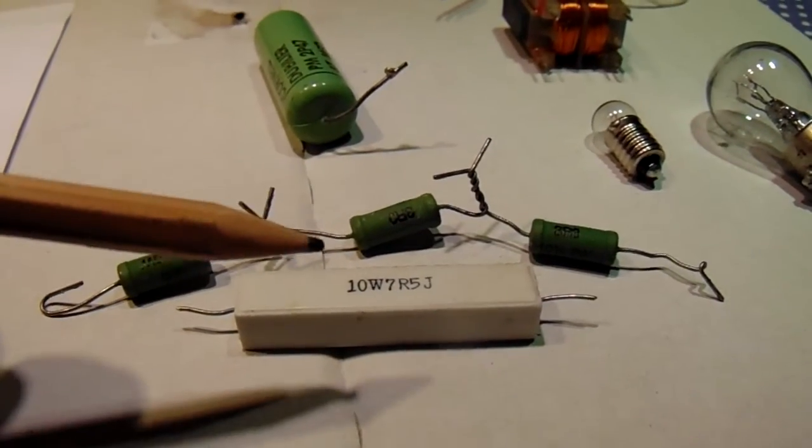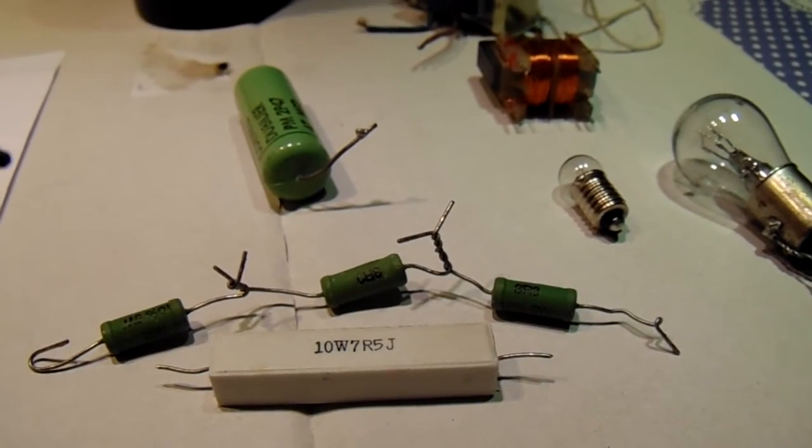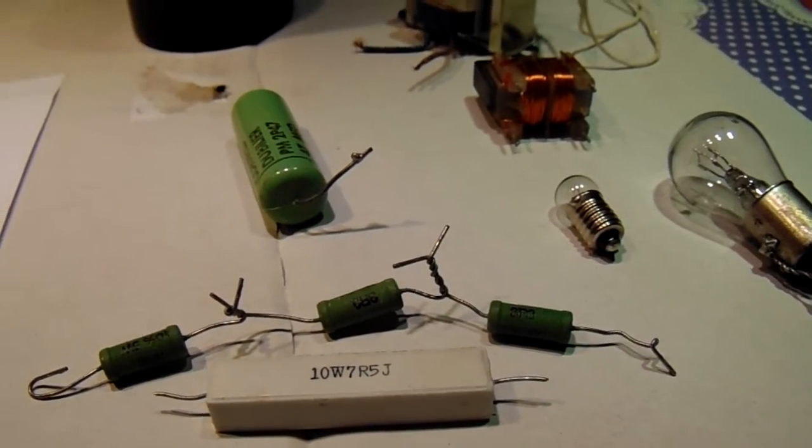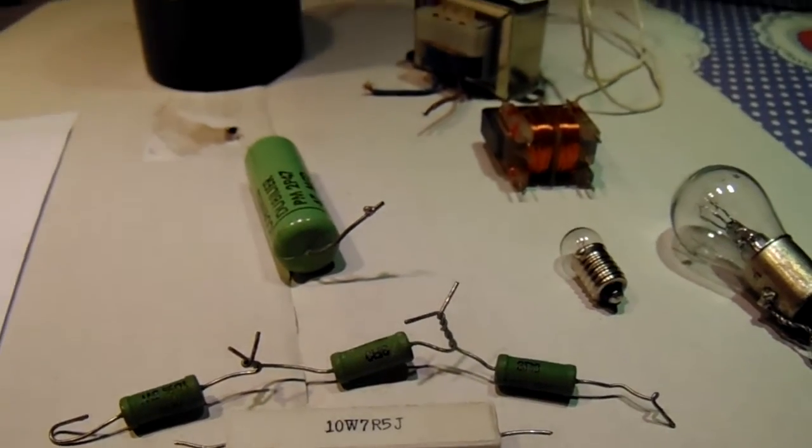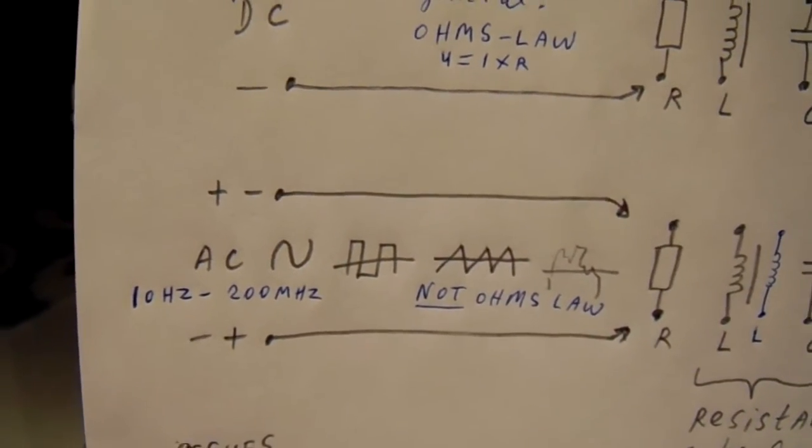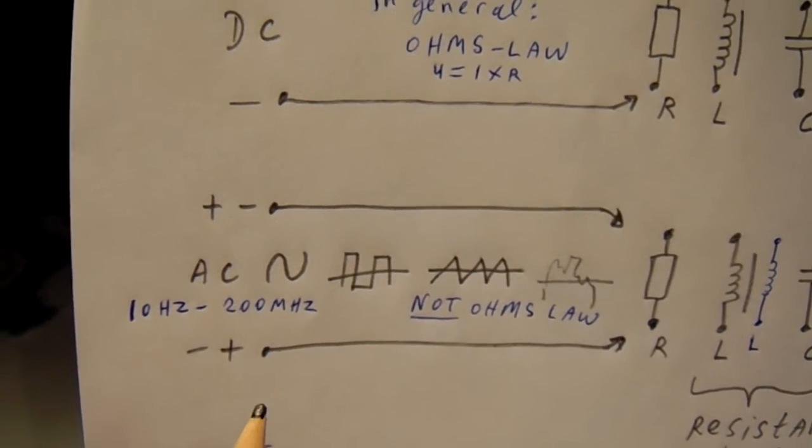All these electronic components act different on DC and on AC. And AC we can say is also a kind of DC, but only for a very short moment and the time is decisive for the property.